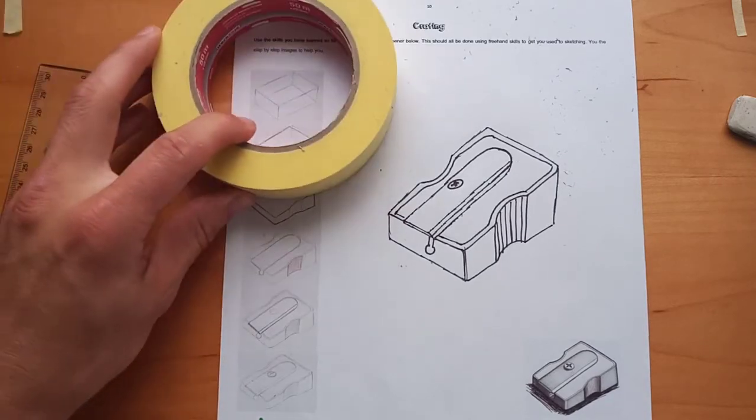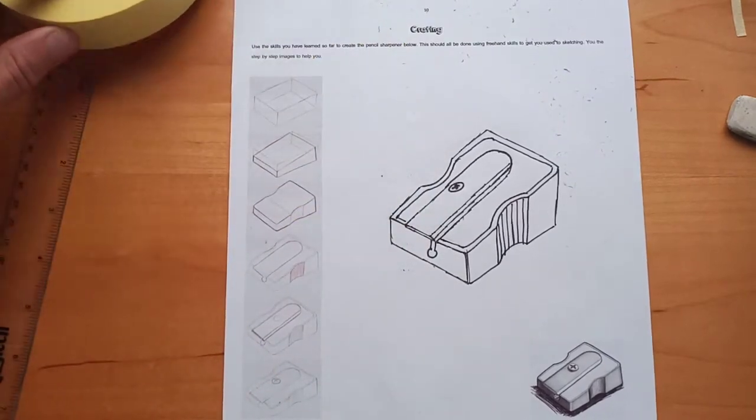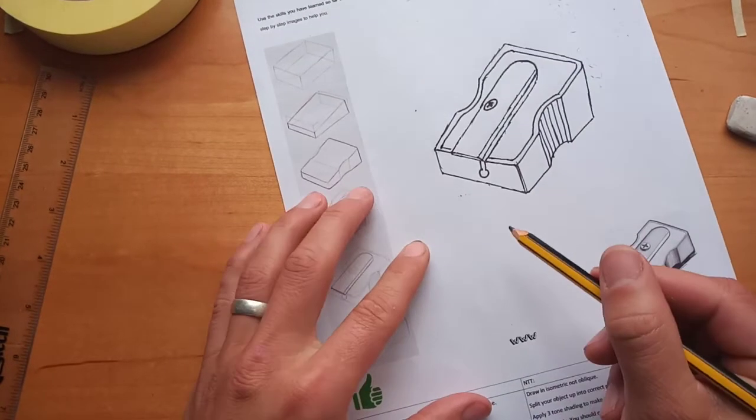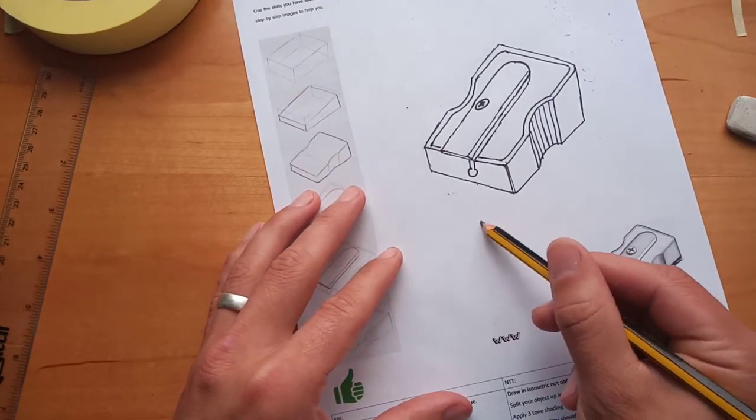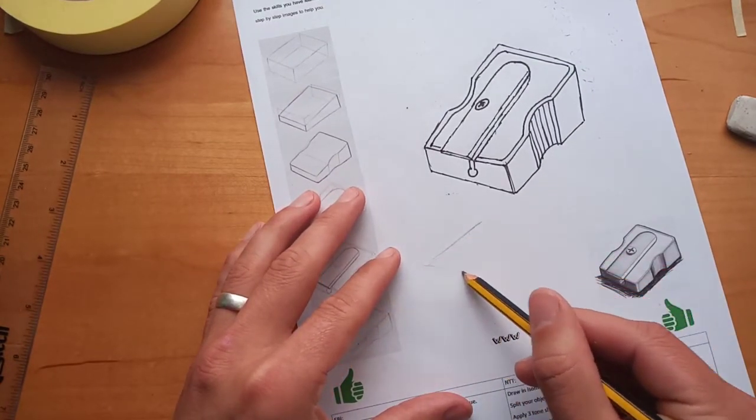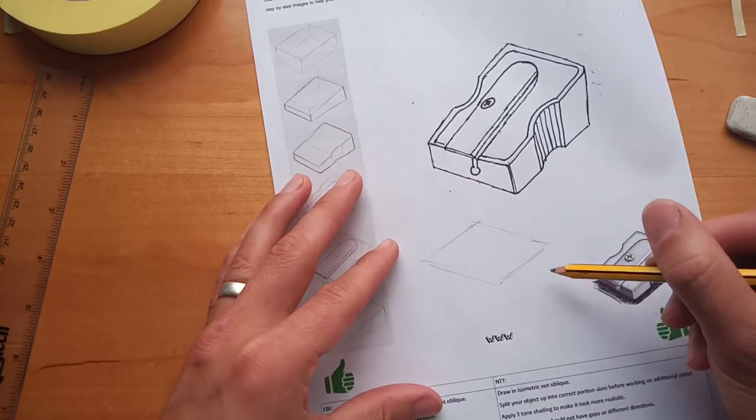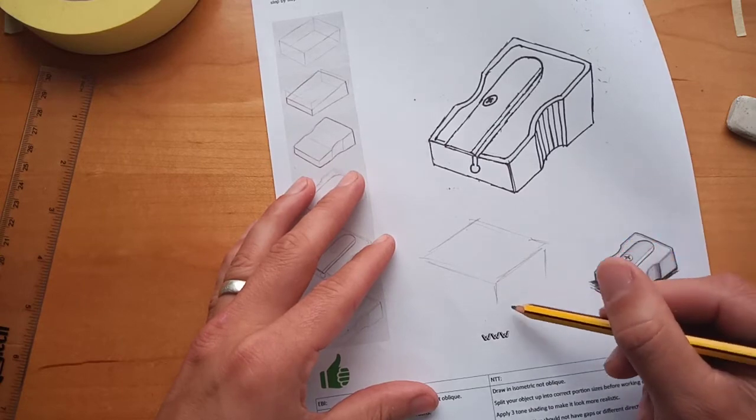So, if I was looking at something like, for instance, this role of sellotape drawing that. Again, you can just build it working around in shapes. And if you want to have a go at this, once you've done the pencil sharpener, you've got a bit of spare time just picking some random objects.